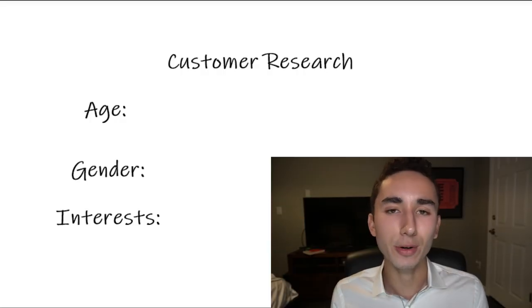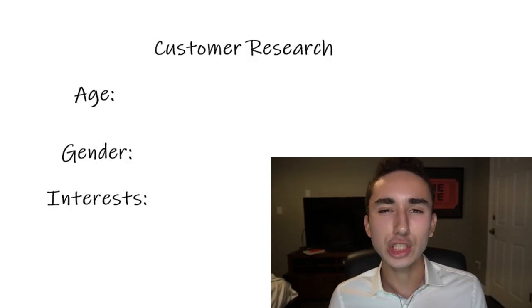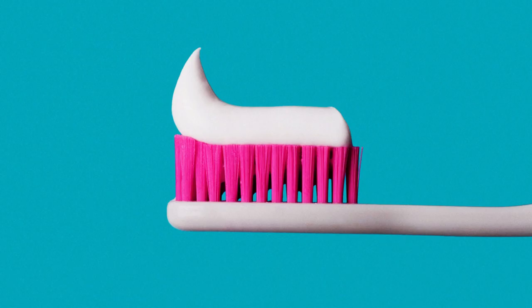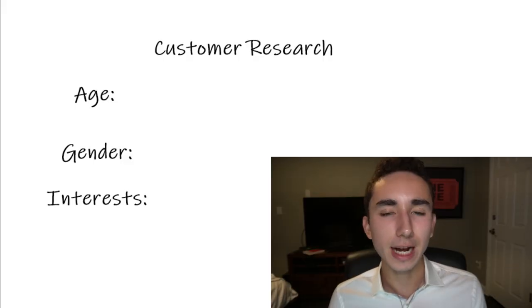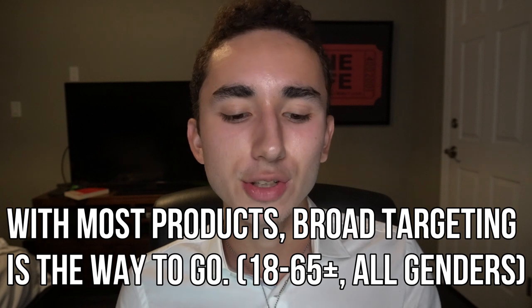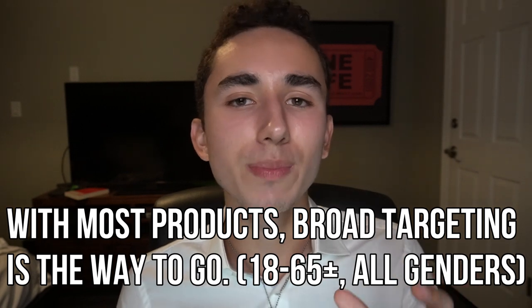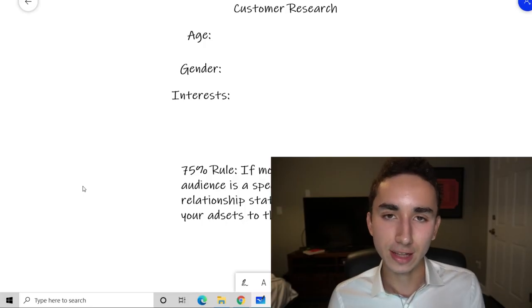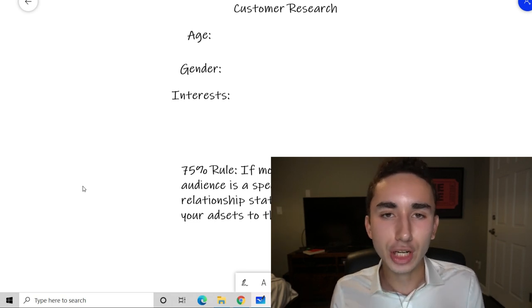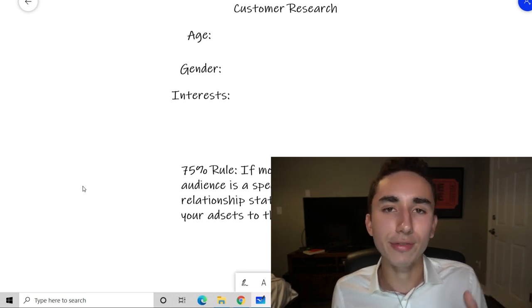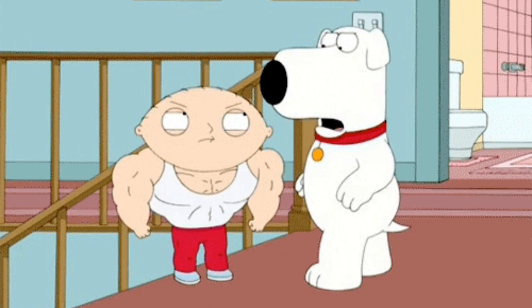Now that we understand our customers, the next step is demographics — the age, gender, and interests of your target audience. For a lot of products that are gender neutral, the best practice is broad targeting: 18 to 65+, all genders. For interests, do something related to the niche — if you're selling a fitness product, target gym or fitness-related interests.